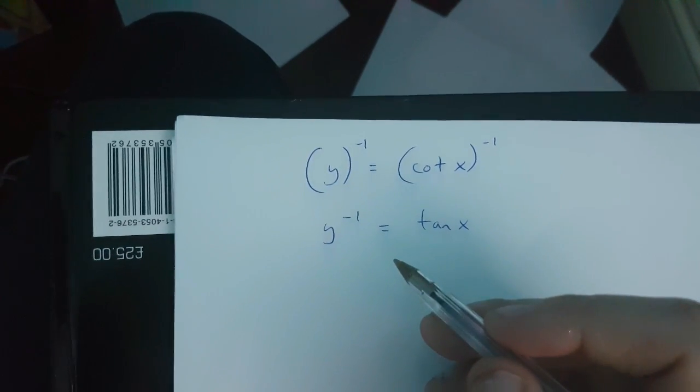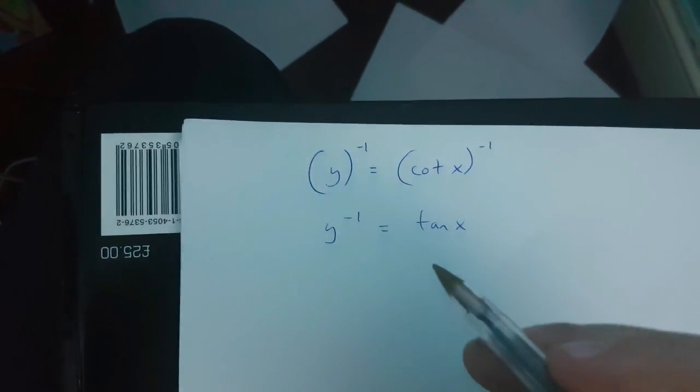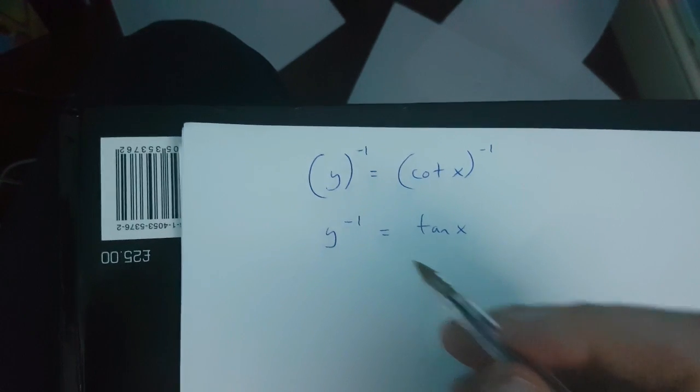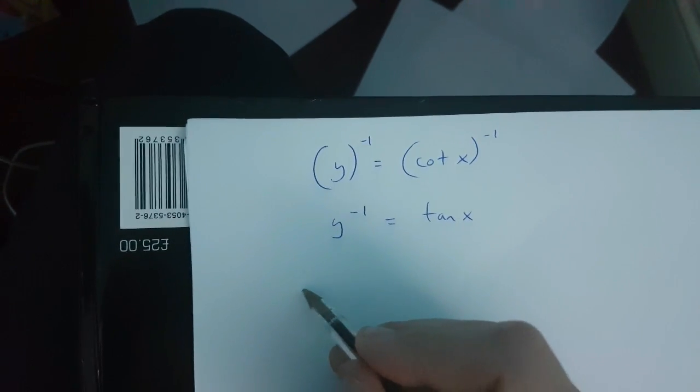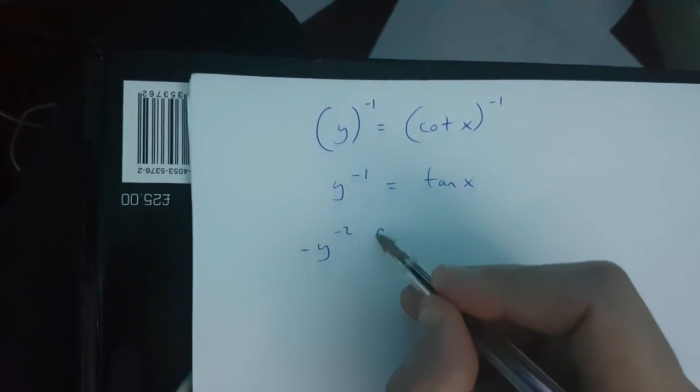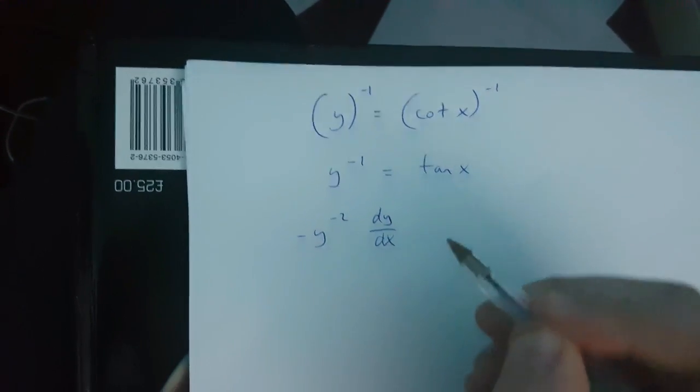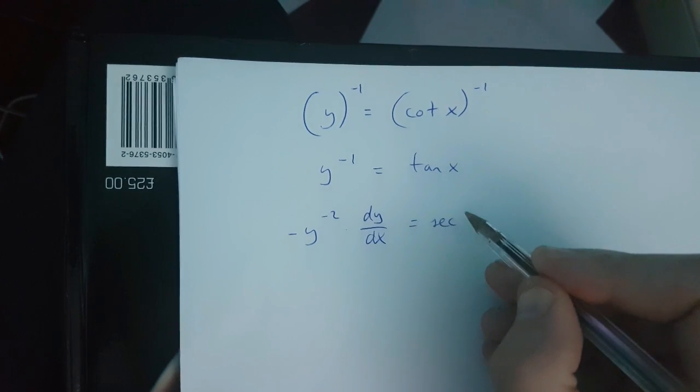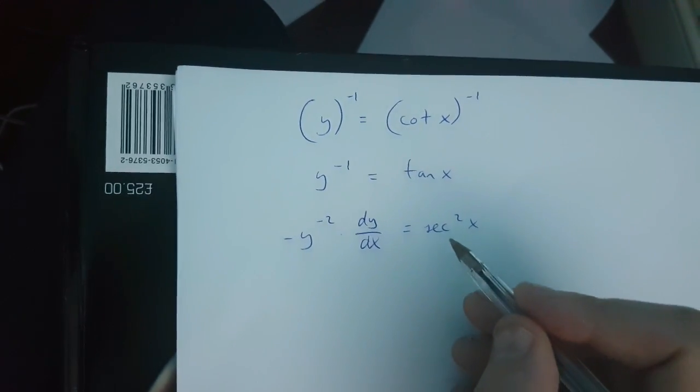Now from here to get dy over dx I need to use implicit differentiation. If I use it what I get is minus y to the power of minus 2 times dy over dx is equal to sec x squared.